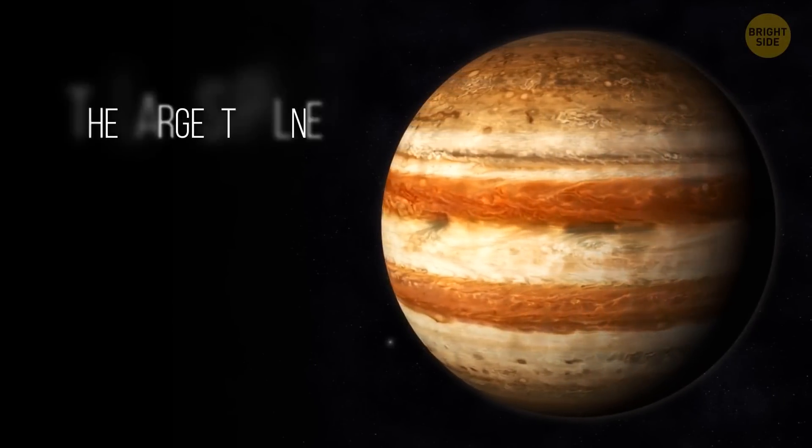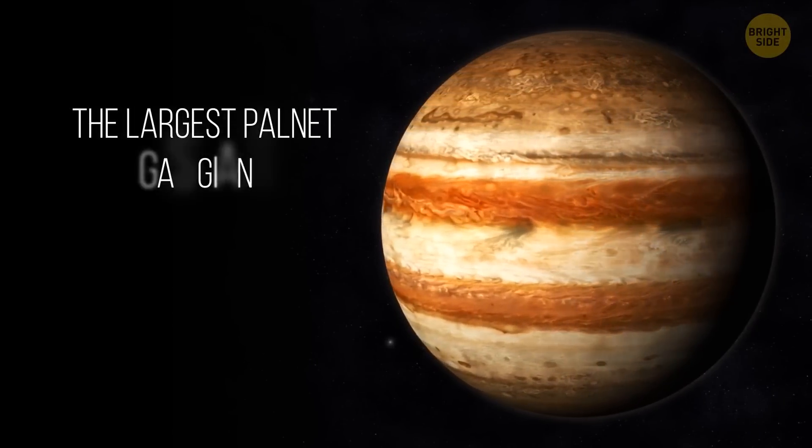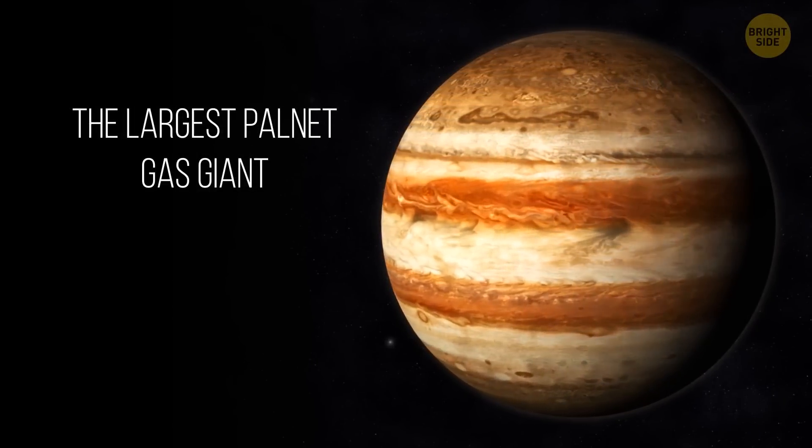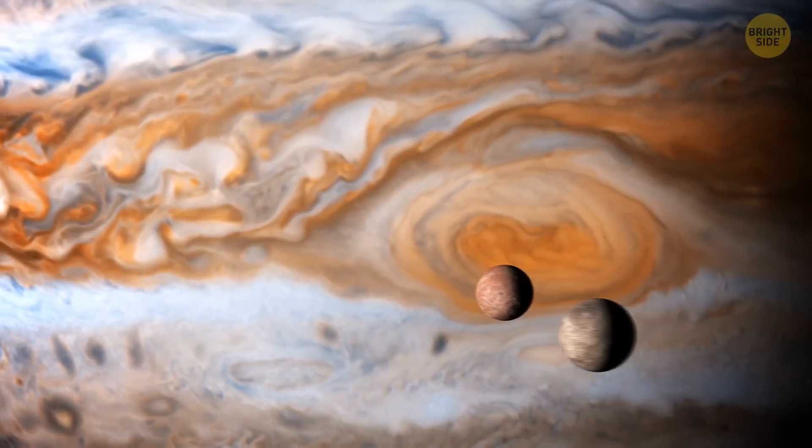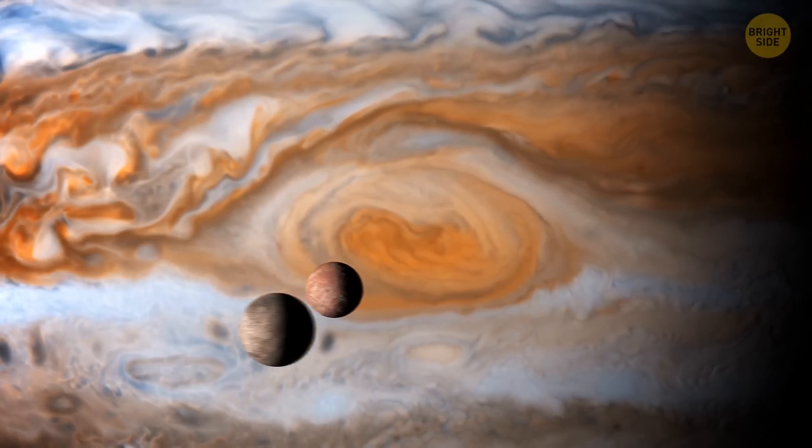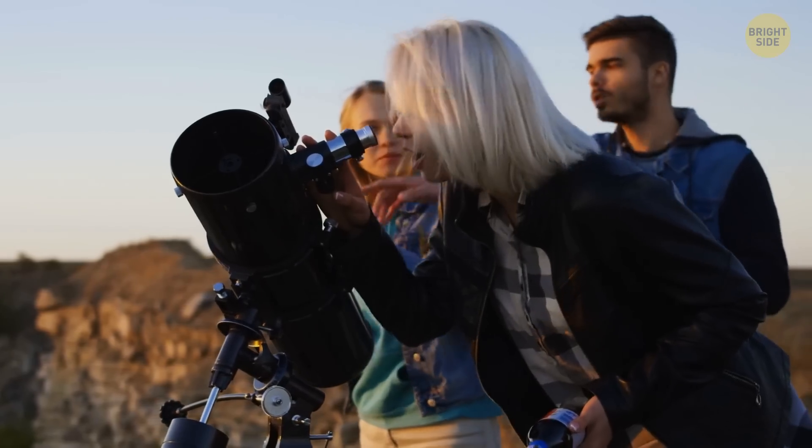The largest planet in the solar system is a gas giant, which means it's made up mostly of gases. Due to the pressure and temperature differences, these gases separate into layers. This creates those red and white bands that can be clearly seen from Earth.